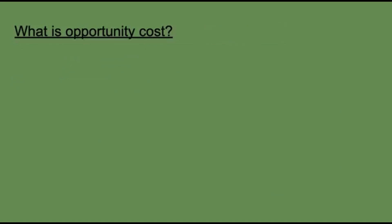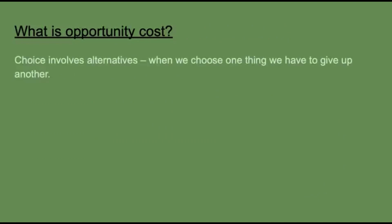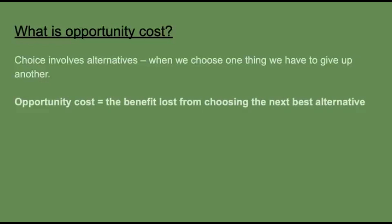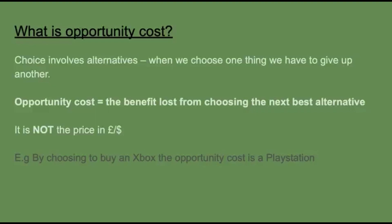So what is opportunity cost? Choice involves alternatives — when we choose one thing we have to give up another. Opportunity cost is therefore the benefit lost from choosing the next best alternative. It's not always the price in pounds or dollars. For example, if someone chooses to buy an Xbox, the opportunity cost is buying a PlayStation, because you have the same amount of money but you're choosing one over the other — you're missing out on the next best alternative.